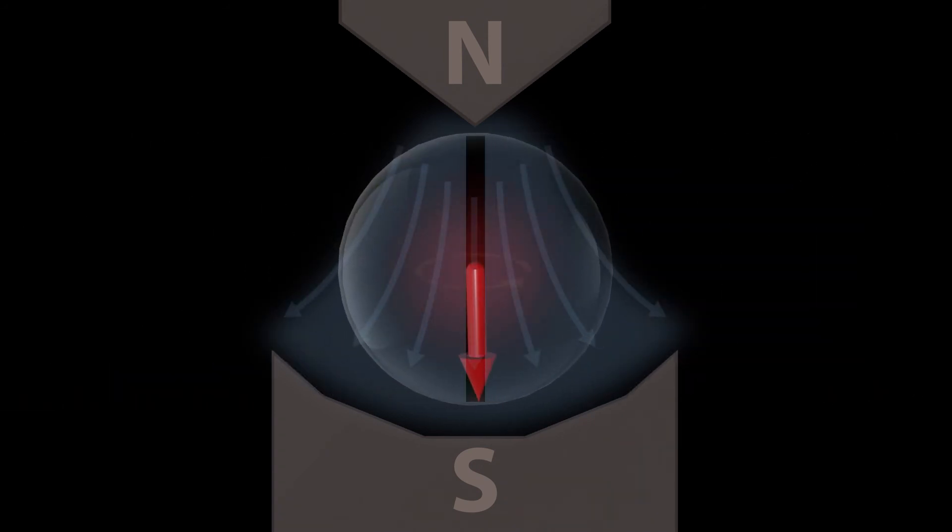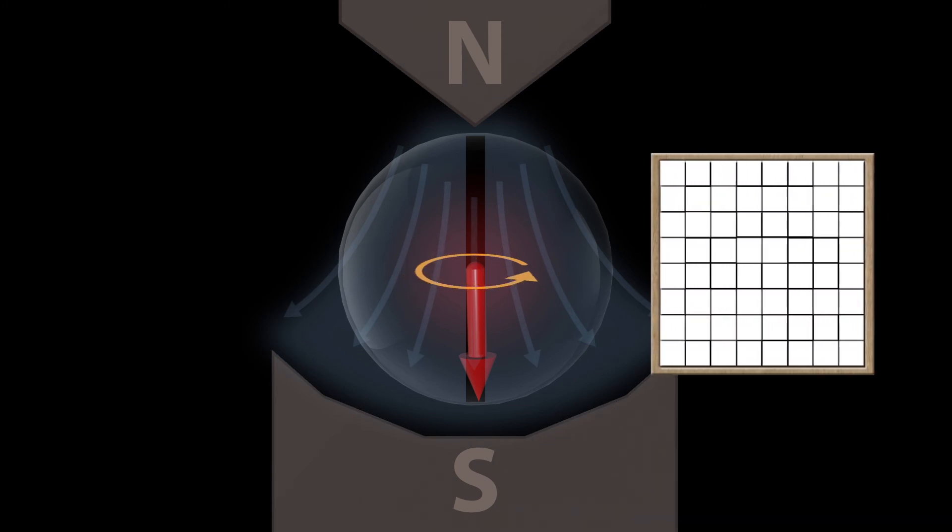An eigenstate does not change at all upon projection. Here, the probability for spin down is 100%.